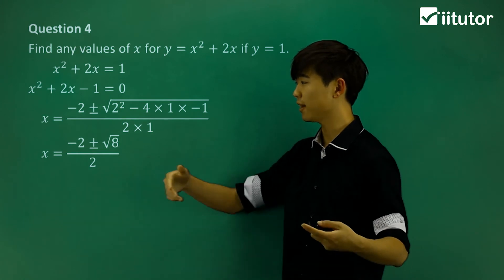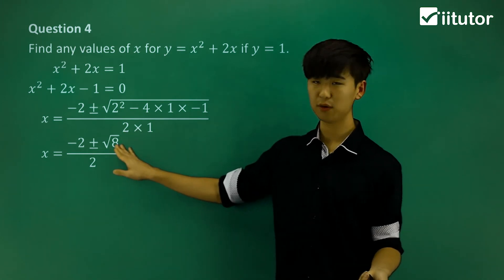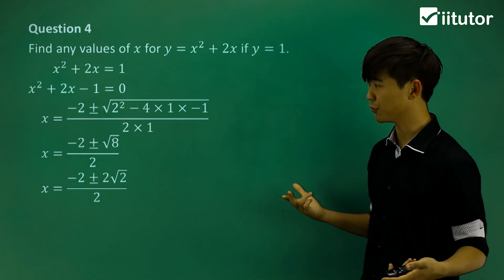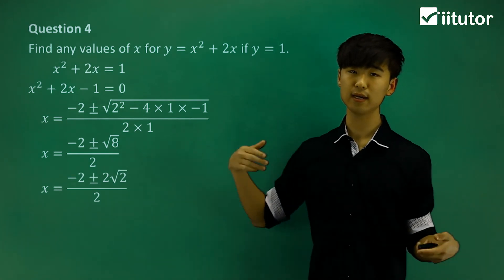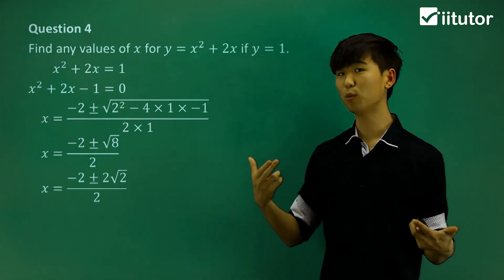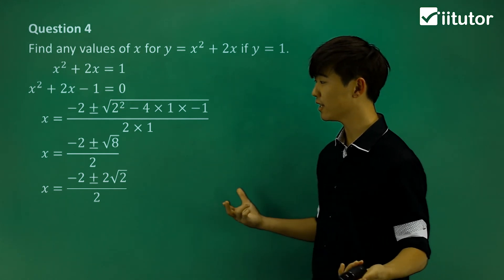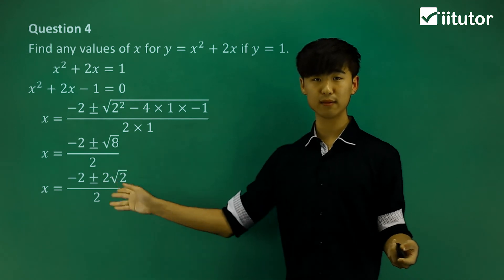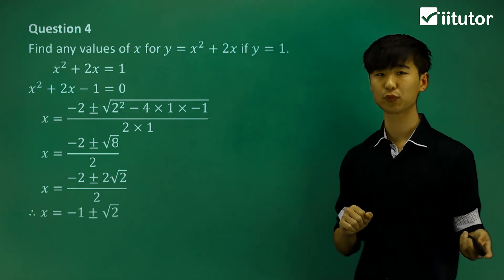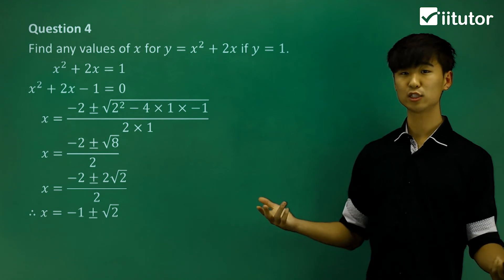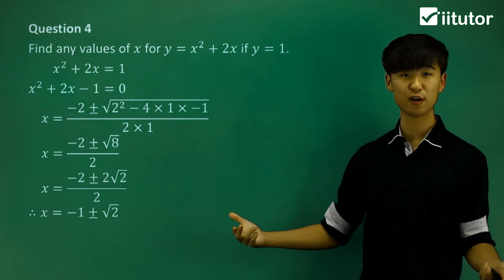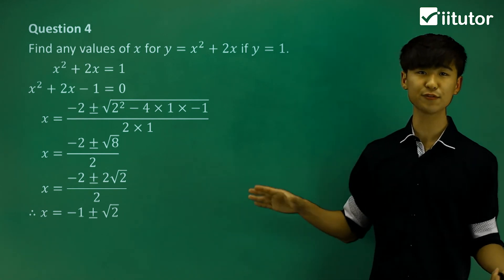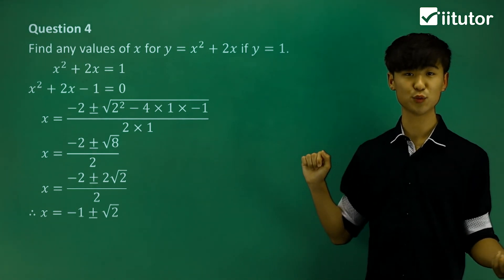Now we want to simplify a little further. Root 8 can be simplified down to 2√2, because √8 = √4 × √2, and that √4 becomes a 2. From here we can divide everything by 2 — cancel all the 2s. The value of x is negative 1 plus-minus root 2. So that's the value of x when y = 1.